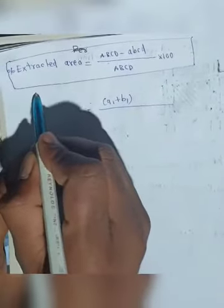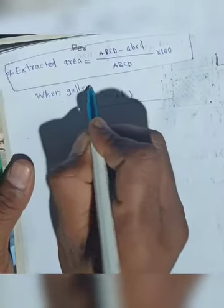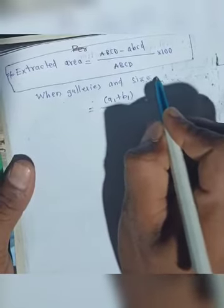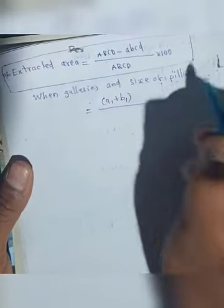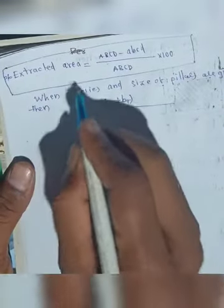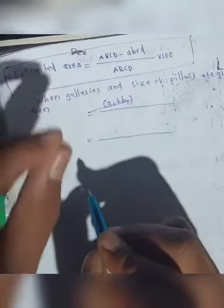When only sides are given, we use the formula as derived. Another formula we have to derive is when the gallery size and size of pillars are given. The same formula applies — we just put the values in.